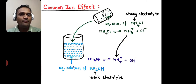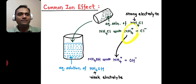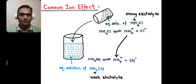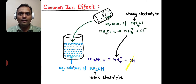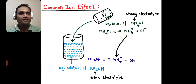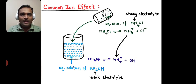So what happens? When ammonium hydroxide undergoes ionization, it forms NH4+ and OH−. But when we add ammonium chloride, it also provides NH4+. That extra NH4+ in the solution combines with OH− and again forms NH4OH. So the ionization of ammonium hydroxide is suppressed or decreased.